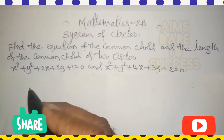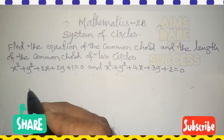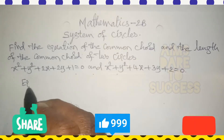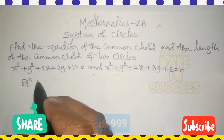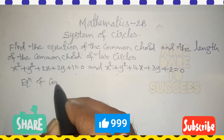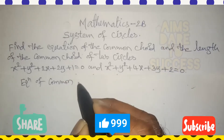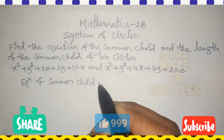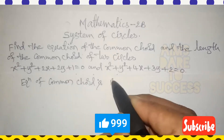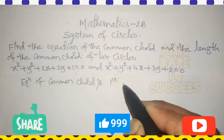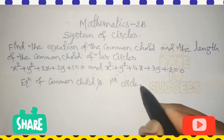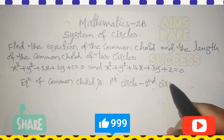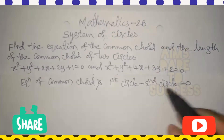Hi, hello, namaste! Today we are discussing about system of circles. Welcome back to Aims Dare to Success YouTube channel. Find the equation of the common chord and the length of the common chord of two circles: x² + y² + 2x + 2y + 1 = 0 and x² + y² + 4x + 3y + 2 = 0.